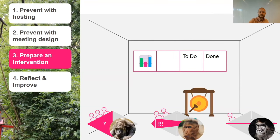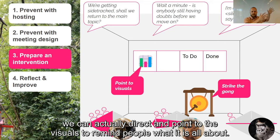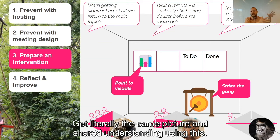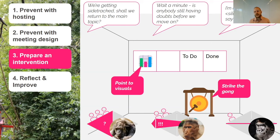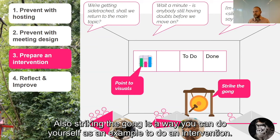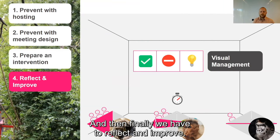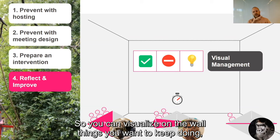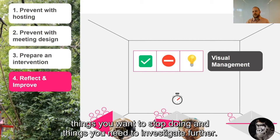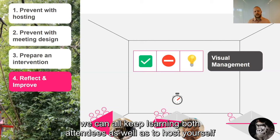Finally, we have the intervention step. We can use the room to our advantage — with visual management, we can literally point to the visuals to remind people what it is all about, get the same picture and share understanding. This helps prevent getting sidetracked. Striking the gong is one way to do an intervention yourself. And then we reflect and improve — we do retrospectives, visualizing on the wall things you want to keep doing, stop doing, and things to investigate further. Using these retrospectives, we can all keep learning, both the host and the attendees.